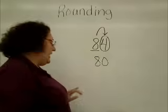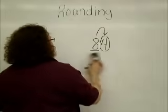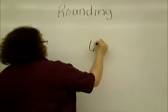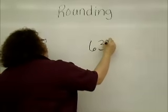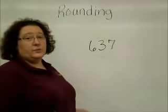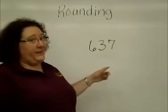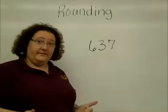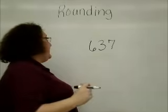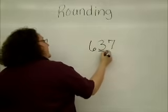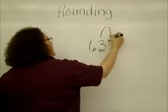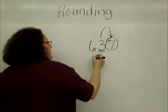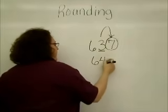Let's try one that might be a little tougher — one with three digits. You give this one a try, then play the tape again and see if you got the right answer. To the nearest ten: ones, tens — go right next door. Seven tells me I have to add one more, so the number rounds to 640.